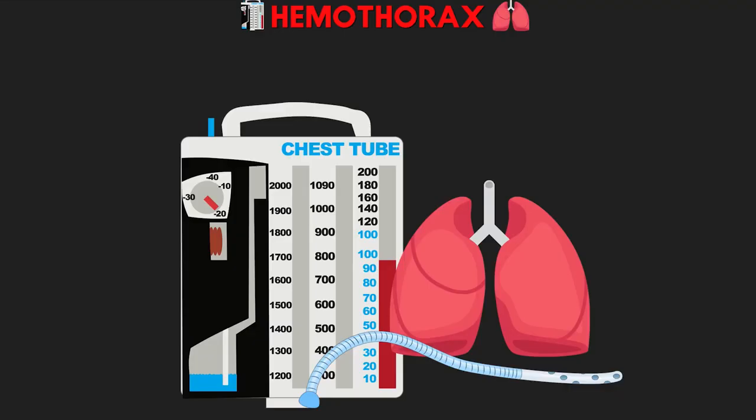Continuing our review for the chest tube series and talking about the disorders that disrupt the pleural space, in this lesson we're going to be quickly covering the hemothorax.